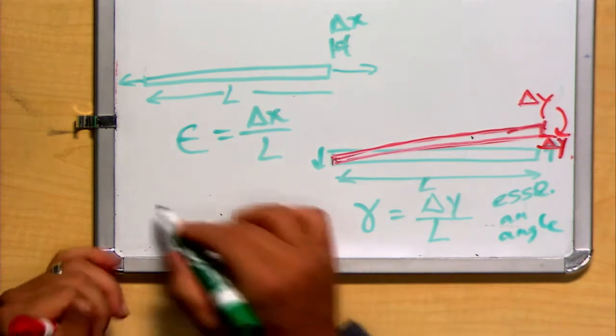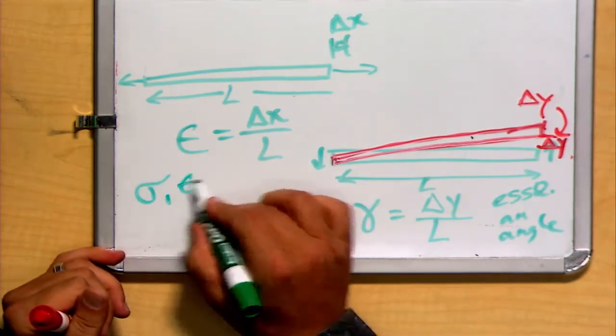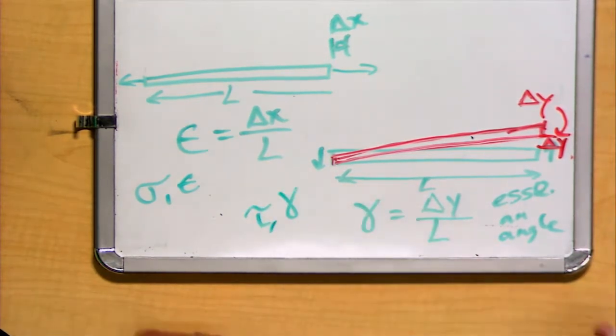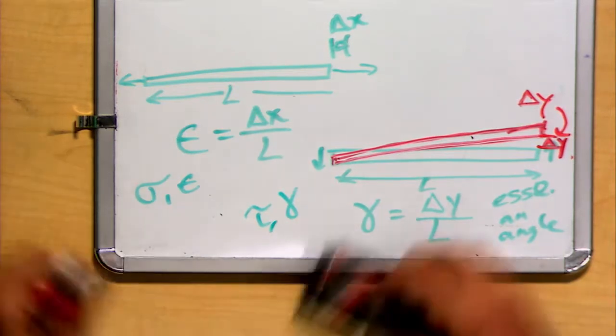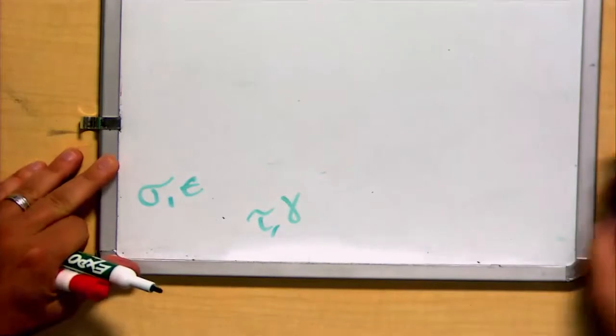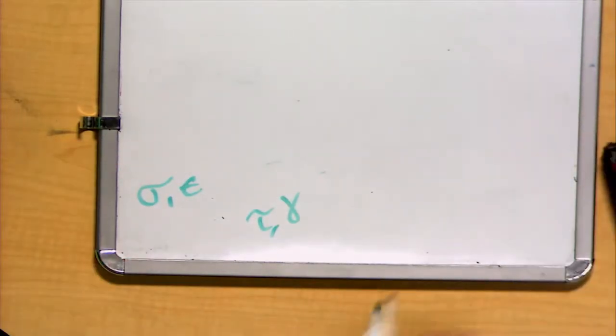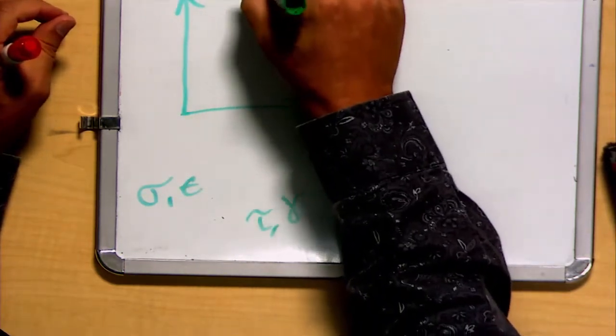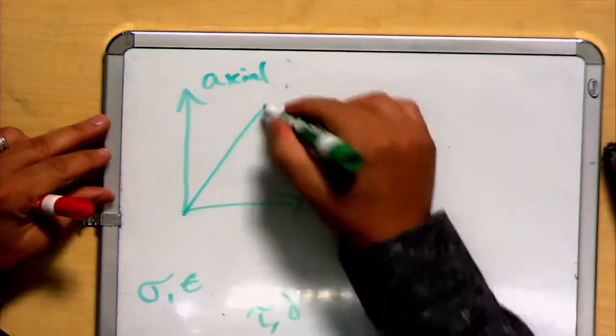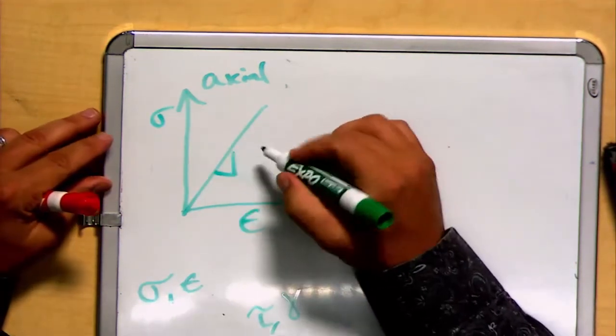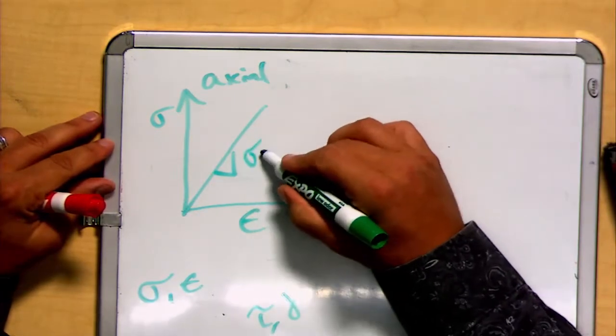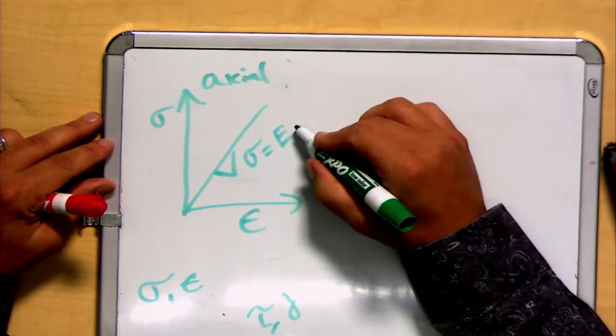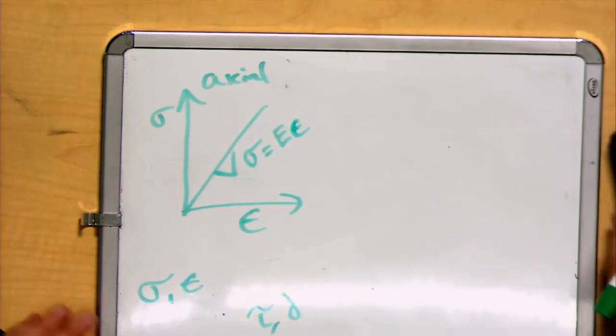We have seen that we have a stress and a strain, and we have equivalents of shear stress and shear strain. These are similarly related for relatively small loads. We know that there is a linear relationship if we plot a stress-strain curve for an axial load. There's a linear relationship such that the stress is equal to some modulus, the modulus of elasticity or Young's modulus, times the strain.